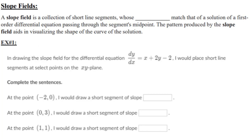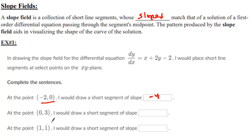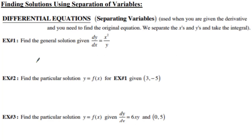Slope fields are a collection of short line segments showing slopes. I'm just taking each point at a time. If I want the slope at (-2, 0), I plug in -2 for x and 0 for y and I get -4. The slope at (0, 3) is equal to positive 4. The slope at (1, 1) is equal to 1. We're just evaluating each single point.